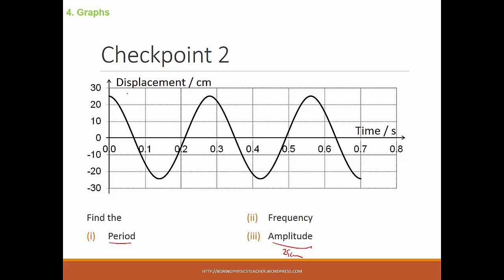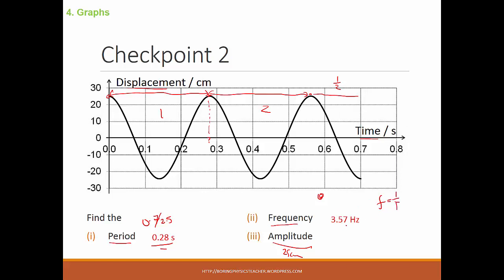For the period — this is a displacement-time graph — the period is simply from one peak to the next peak. For this particular question you may have some difficulty determining the exact period, maybe 0.27 or 0.28. A more accurate way is to count the number of waves: you have two and a half waves over 0.7 seconds, so divide 0.7 by 2.5 to get 0.28 seconds. Once you have the period, frequency is easy: frequency equals one over period, giving 3.57 hertz.